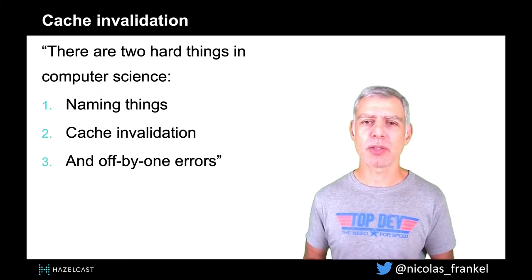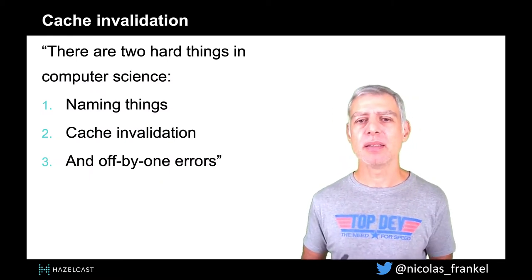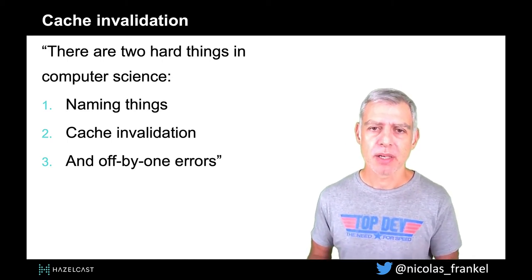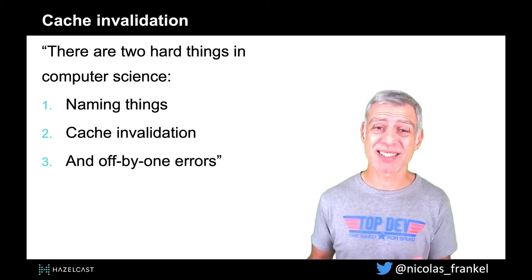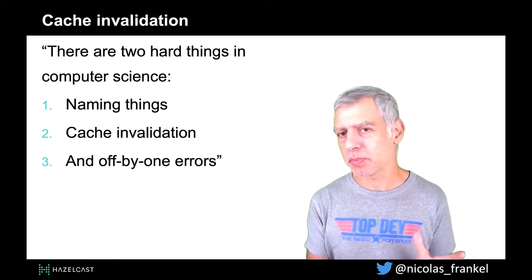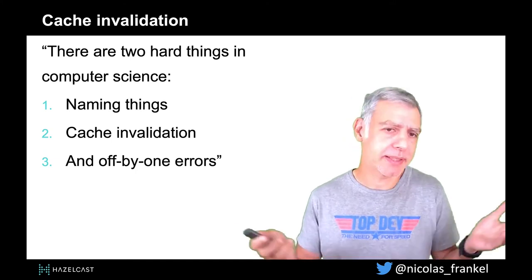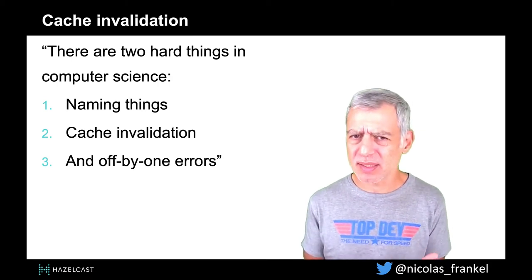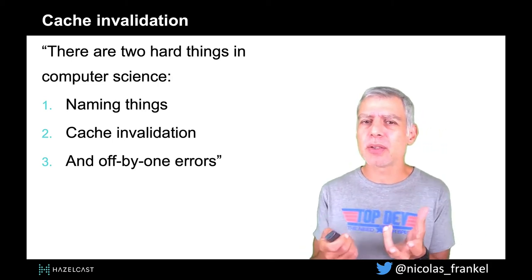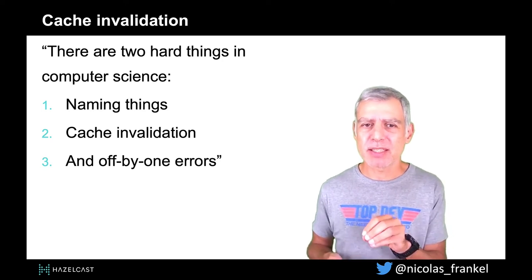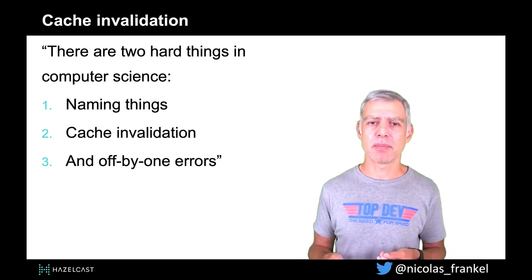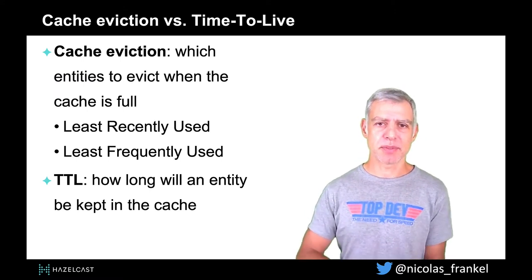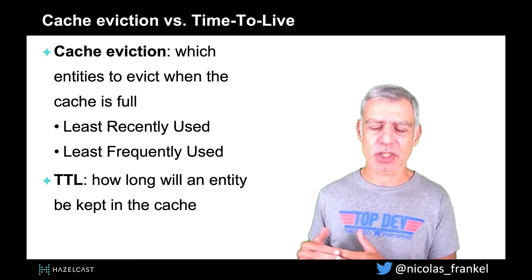You might have heard that there are two hard things in computer science: naming things, cache invalidation, and of course off-by-one errors. Cache invalidation — what is it? We need to define it, because cache invalidation is not only removing items from the cache. There are other reasons to remove items from the cache, and that other reason is cache eviction. There is a difference between cache eviction and cache invalidation.